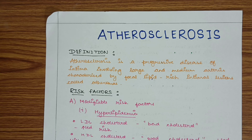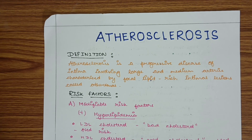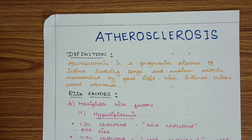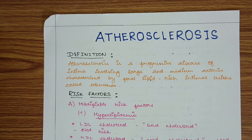So let's start with the definition. Atherosclerosis is a progressive disease of the intima involving large and medium arteries, characterized by focal lipid-rich intimal lesions called atheromas. It involves the intimal layer, which is the innermost layer of the blood vessel. These lipid-rich lesions are focal, meaning they are patchy and not uniformly distributed.